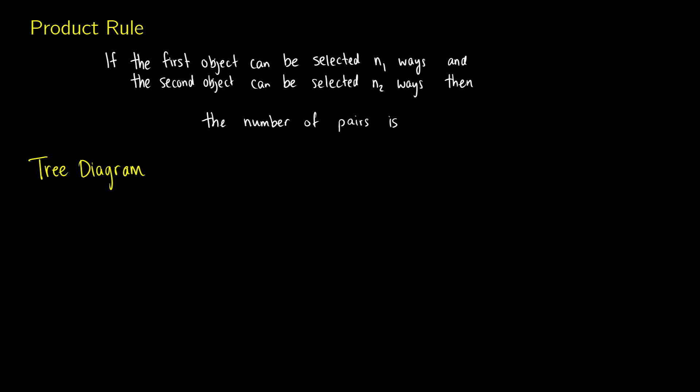So here's how permutations work with the product rule. If you have an object that can be selected in n1 ways, so let's say you have some sort of meat and there's three different types, and then you have some sort of cheese where there's five different types. So if meat can be selected in three ways, and the second object can be selected in n2 ways, this would be cheese, the number of possible pairs you're going to have is n1 times n2, in which case we would have 15 total pairs of different meats and cheeses that we could serve.